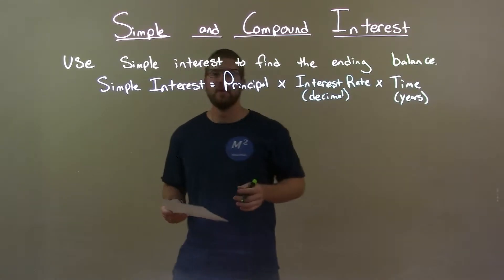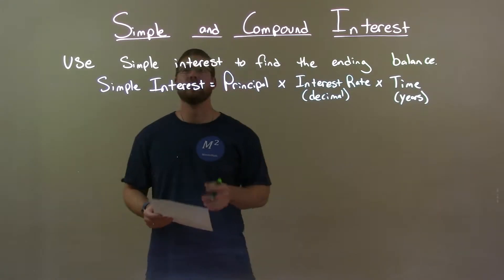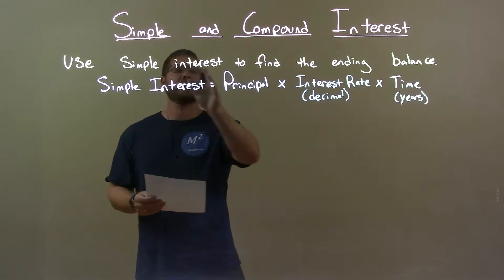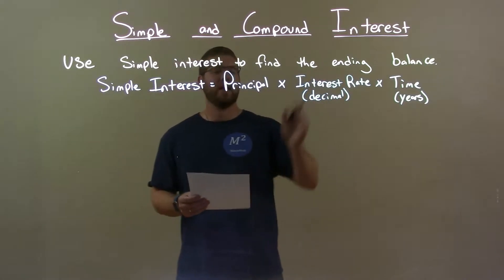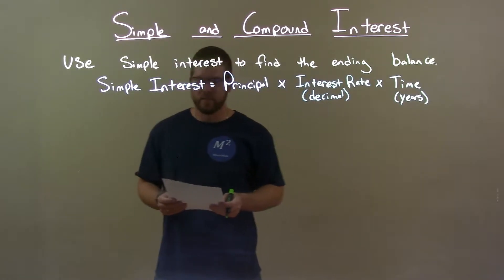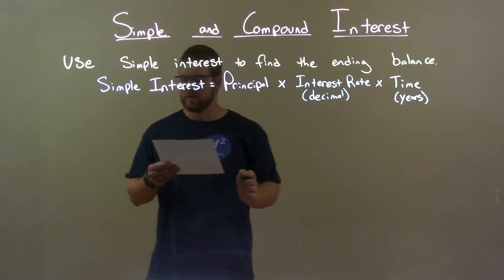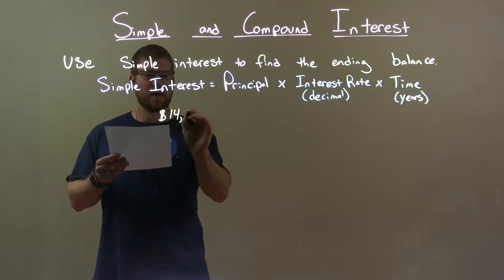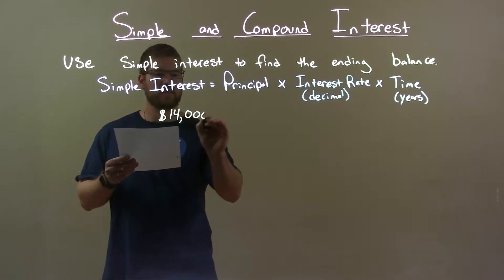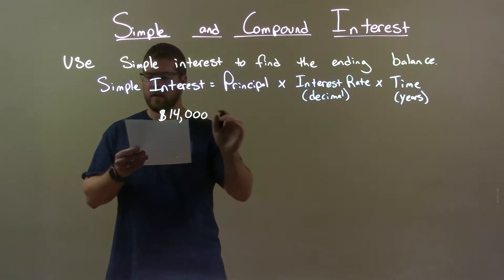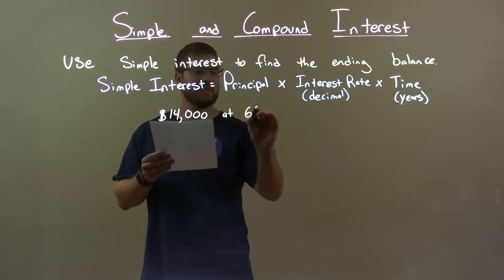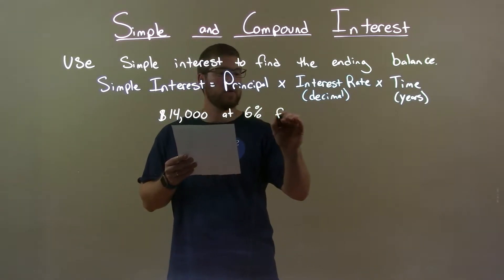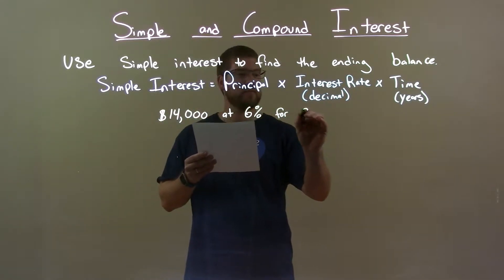Hi, I'm Sean Gannon and this is Minute Math, and today we're learning about simple and compound interest. Use simple interest to find the ending balance. If I was given this problem: $14,000 at 6% for nine years.